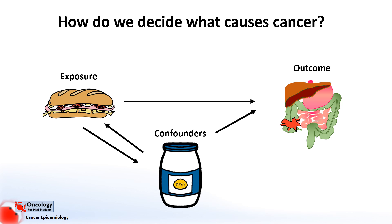This is why epidemiology has to utilise natural experiments — observing people who are already exposed to a given exposure and comparing them to people who aren't. Confounders have to be dealt with by designing studies that account for these confounding factors, collecting large amounts of data about the confounders, and using statistics. In epidemiology, these tend to be studies known as cohort studies or case-control studies. We'll talk about these more in future videos.